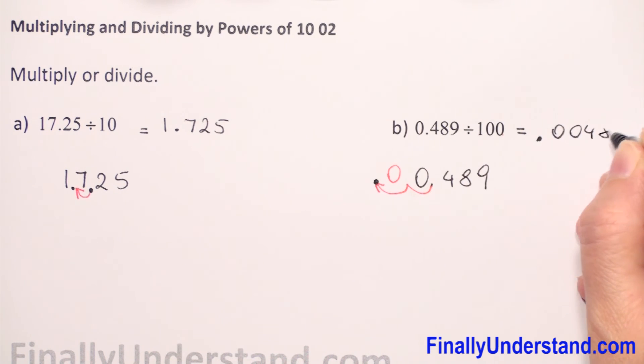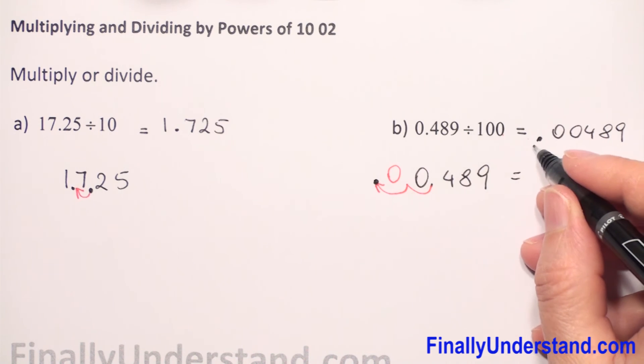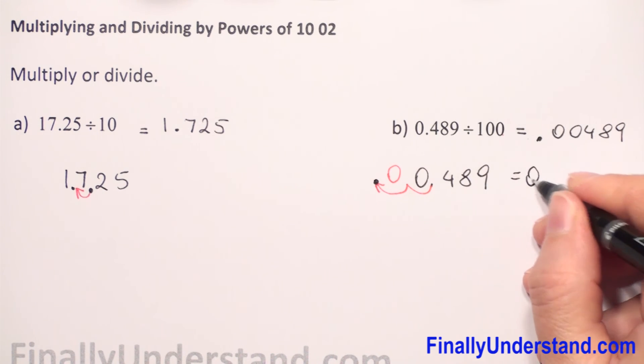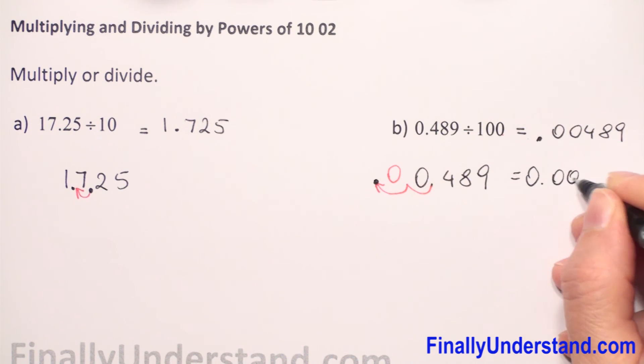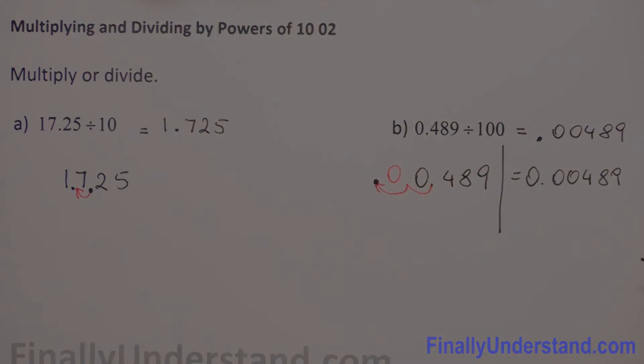So our solution will be decimal point 00489. We can write that this is equal—we can always add the whole number is zero in the empty space—so we can write 0.00489. Doesn't matter if you write the solution either way, they are both correct.